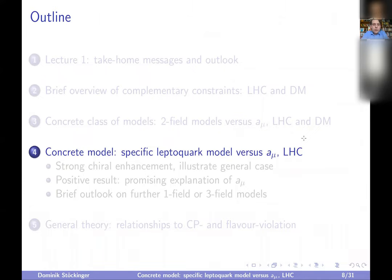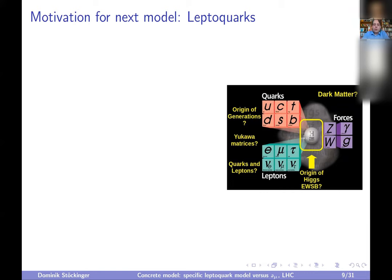Now let's come to the second example: the leptoquark model. Leptoquarks are definitely interesting on their own, but let's also use this as an example of g-2 and LHC in a model with strong chiral enhancement. The discussion is illustrative of the general case of models with strong chiral enhancement. The result will be positive — this is a promising explanation of g-2.